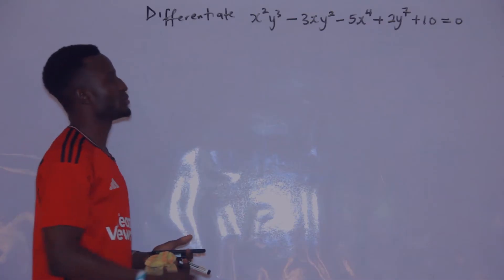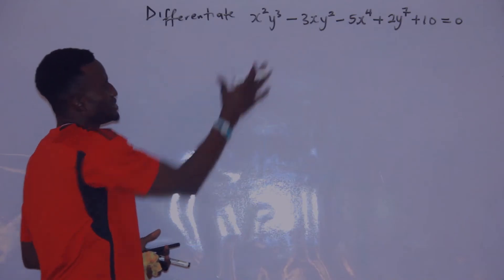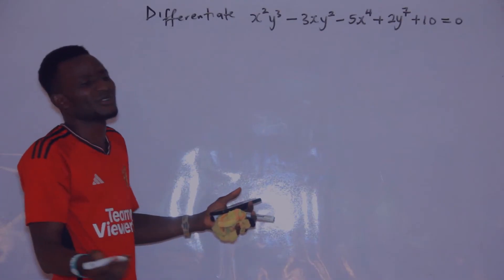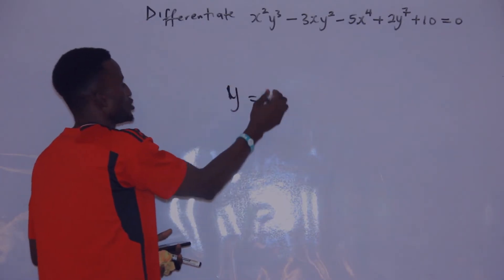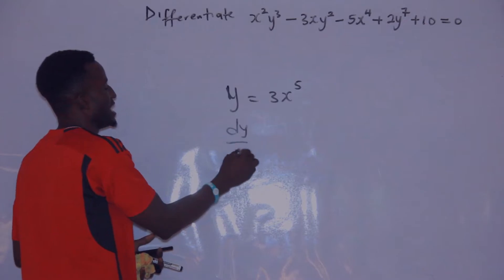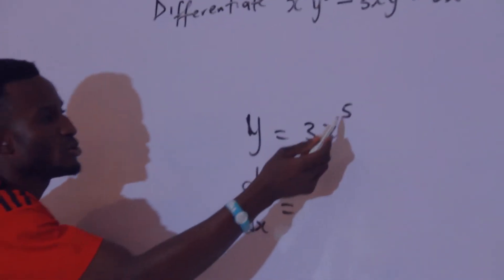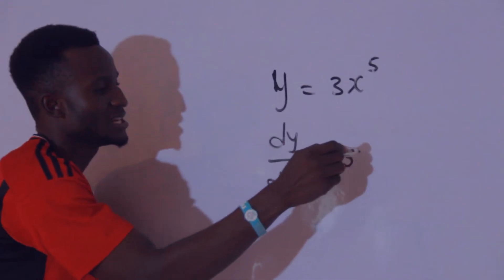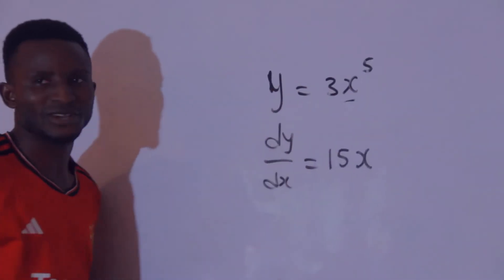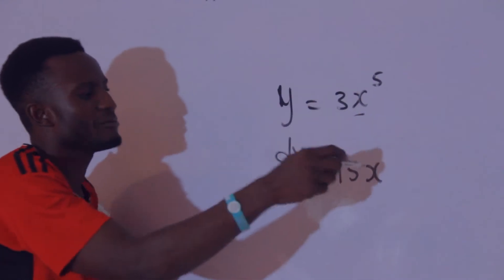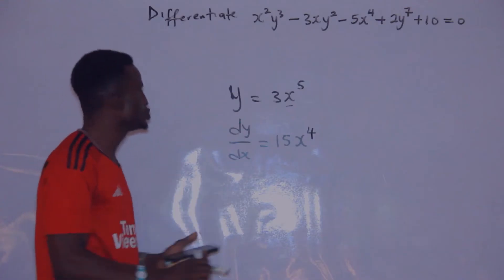I have a shortcut. Before I go into the shortcut for implicit differentiation, let me quickly remind us of the basic knowledge about differentiation. If you are given y equals 3x raised to the power 5 and asked to find dy/dx, the basic knowledge is: multiply 5 with 3, that gives 15. Then subtract 1 from the power: 5 minus 1 equals 4.